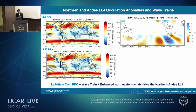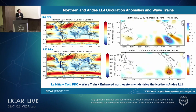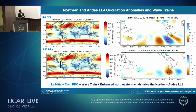Since northern and Andes jet types are more frequent during cold phases, we look at them together and see different signs or phases of Rossby wave trains as they approach South America. We also see enhanced northeastern winds from the northern Atlantic flowing into North and South America to favor the northern and Andes jets. La Niña and cold PDO provide the remote forcing that drives the northern and Andes low-level jet during cold phases.